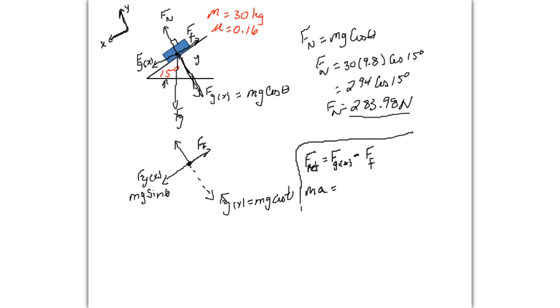Your force of gravity in the x direction we just said is mg sine theta. Subtract your force of friction. And friction is mu times your normal force, or mu times force normal. What's normal force? mg cosine theta.